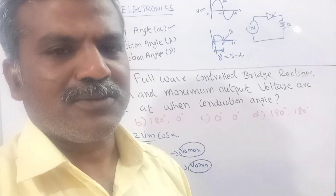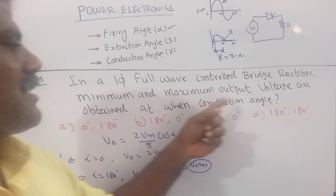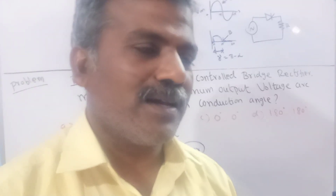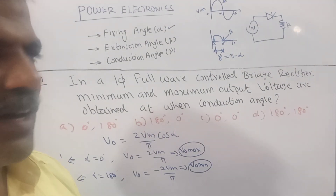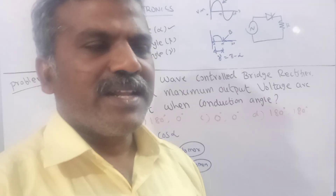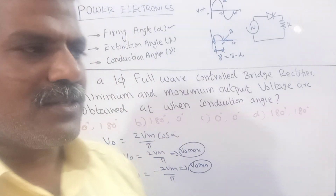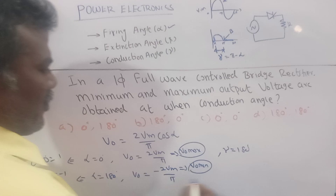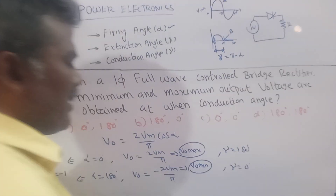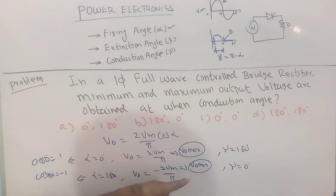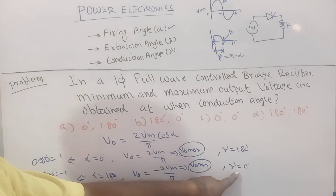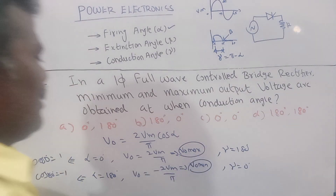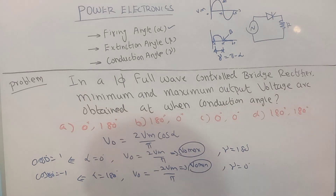The question: minimum and maximum output voltage are obtained at which conduction angle? When alpha equals 0 degrees, gamma equals 180 degrees — that gives maximum voltage. When alpha equals 180 degrees, gamma equals 0 degrees — that gives minimum voltage. So alpha equal to 0 gives maximum output voltage.